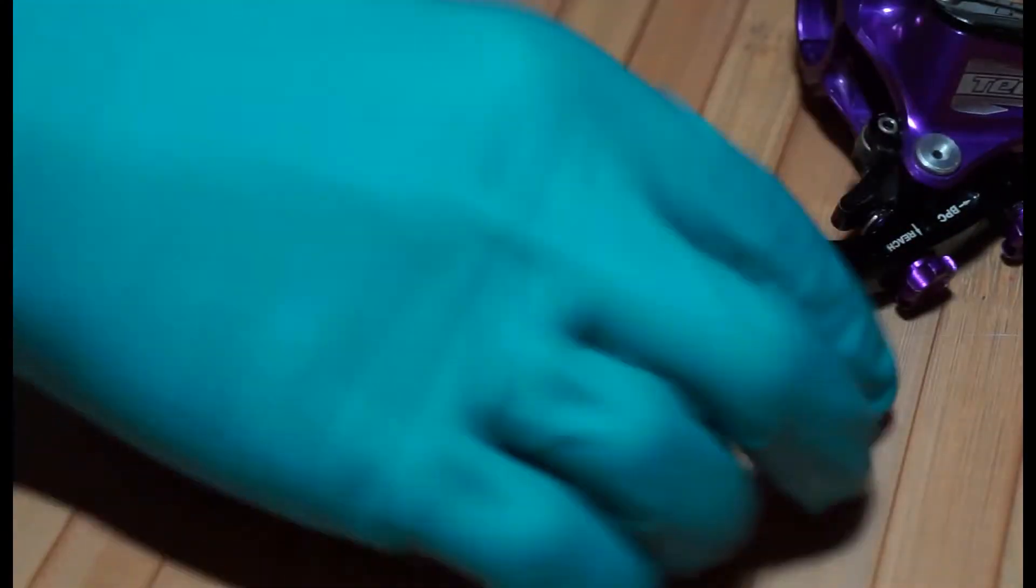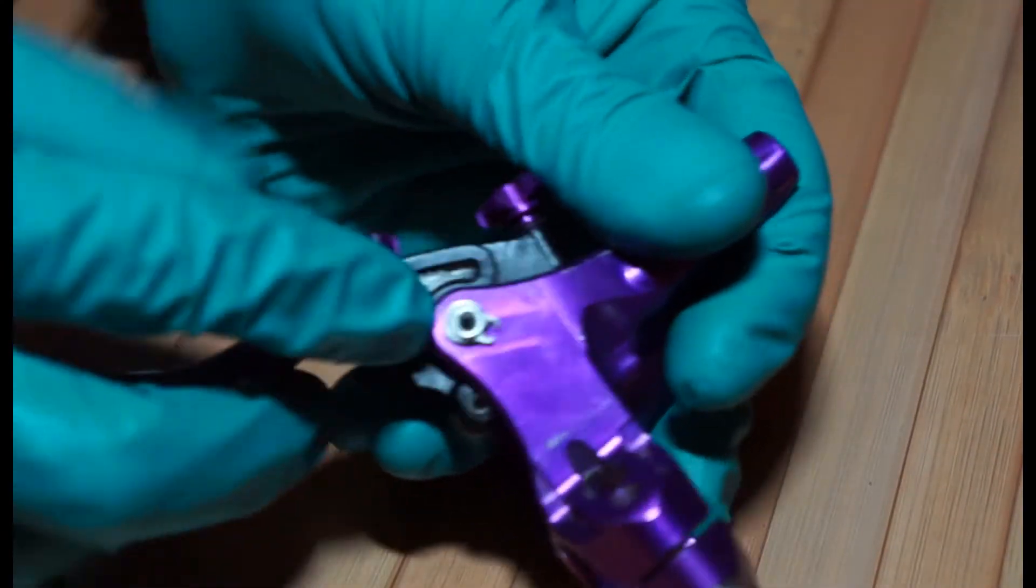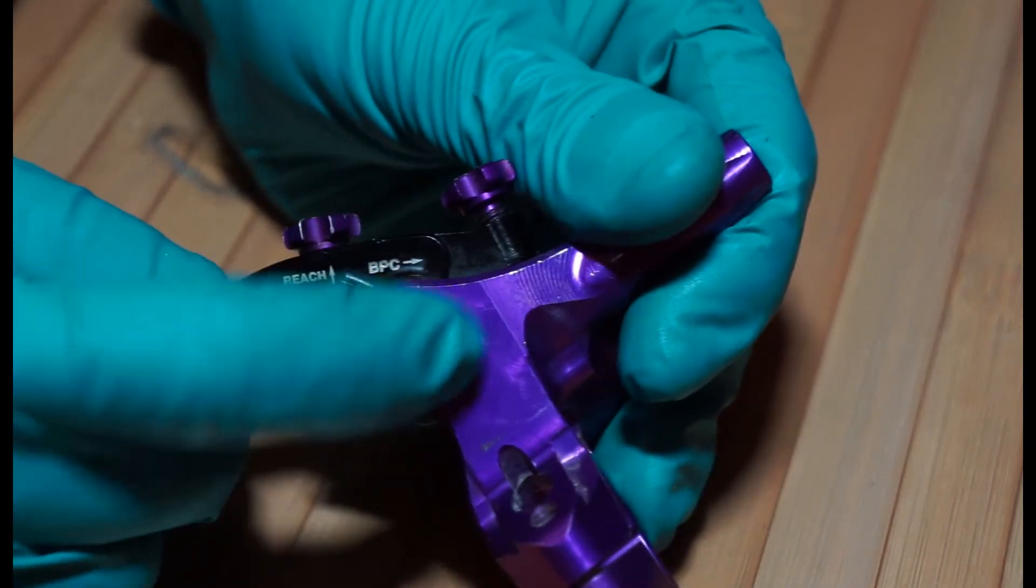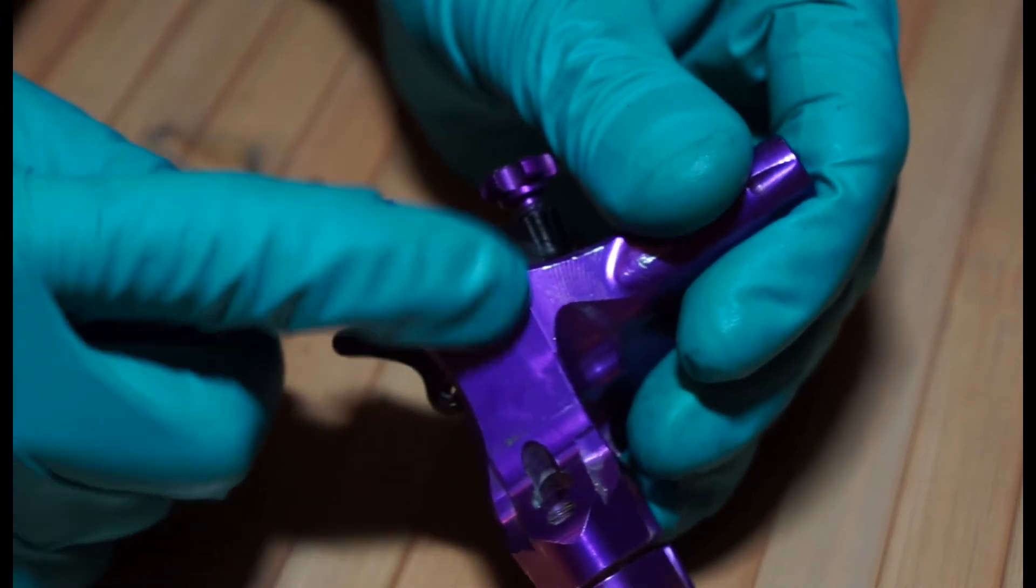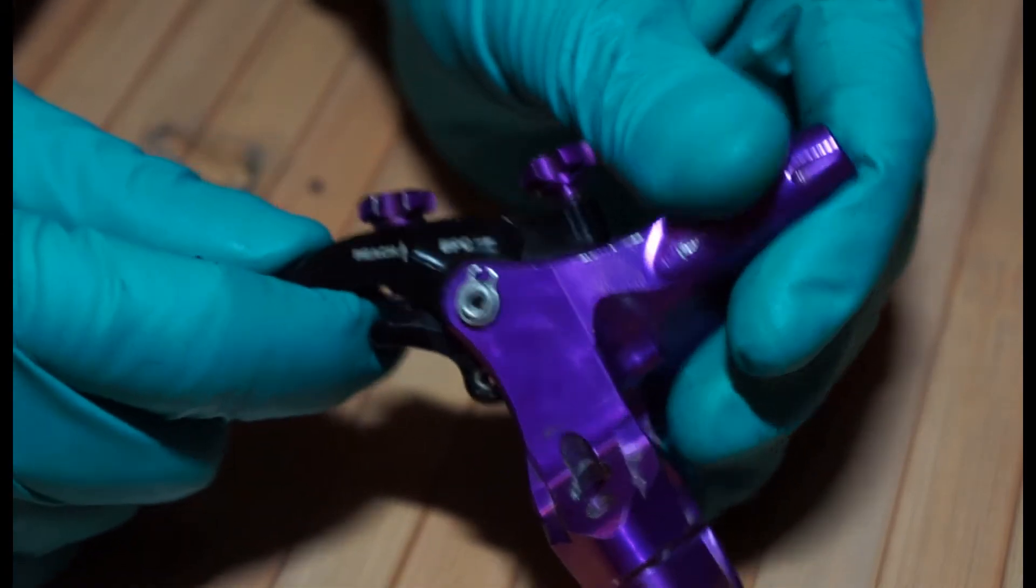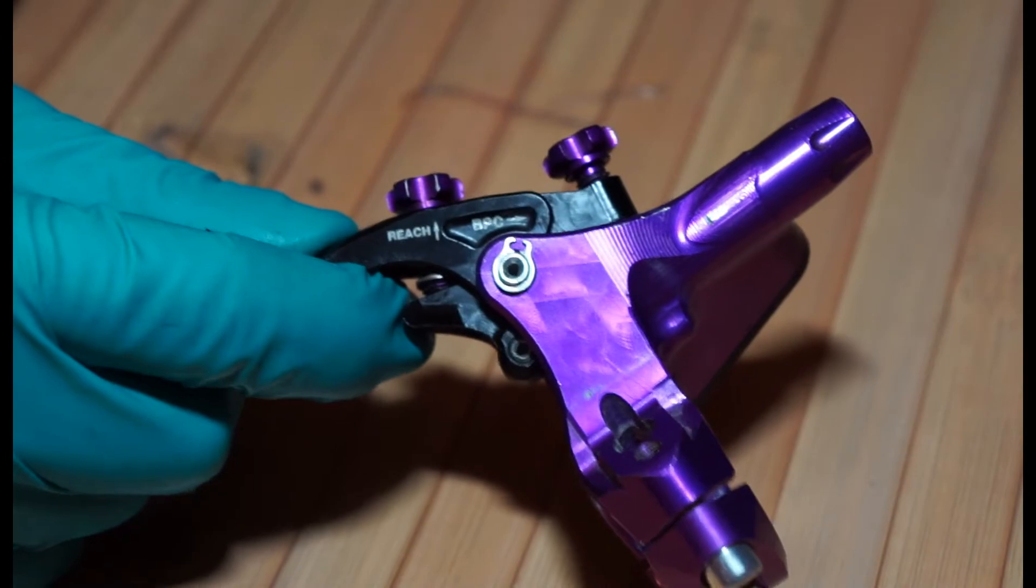The next thing is, we're going to remove this. There's a little circlip that goes around this silver pivot at the bottom. We do have a pair of circlip pliers. The ones that we got are Knipex pliers.